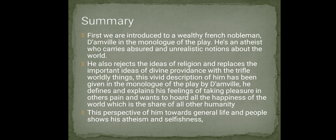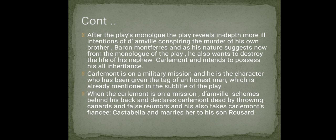After the play's monologue, the play reveals in depth more ill intentions of D'Amville — conspiring the murder of his own brother, Baron Montefiaris. He also wants to destroy the life of his nephew, Charlemont, and intends to possess all of his inheritance. Charlemont is on a military mission and is the character given the tag of an honest man in the subtitle of the play.